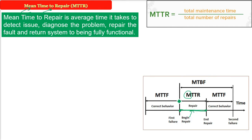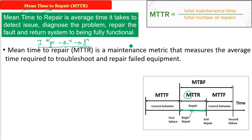MTTR is the average time it takes to detect the issue, diagnose the problem, repair the fault or error or bug, and then return the system to its functionality. MTTR is a maintenance metric — please remember it is a maintenance metric — that measures the average time required to troubleshoot and repair failed equipment. We find various repair times and take their average.